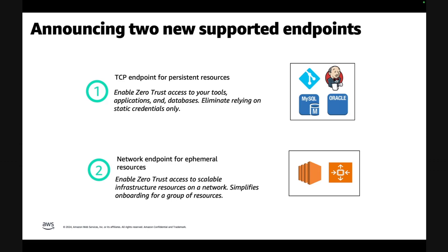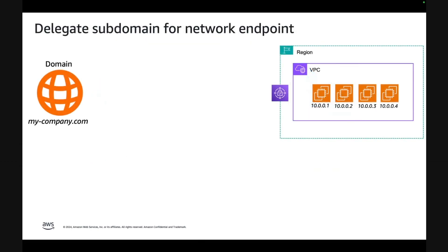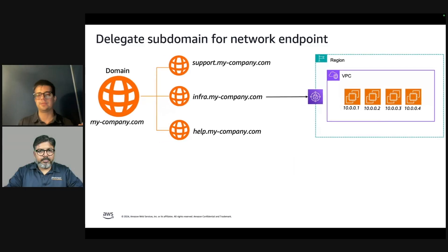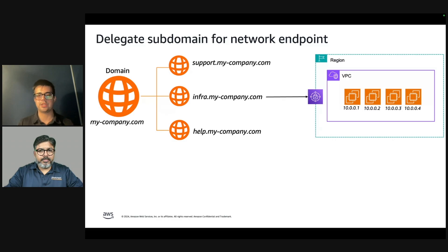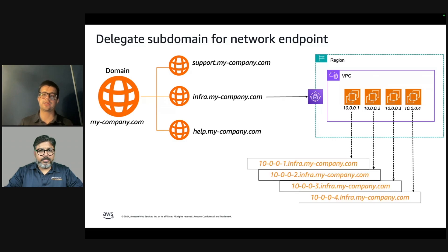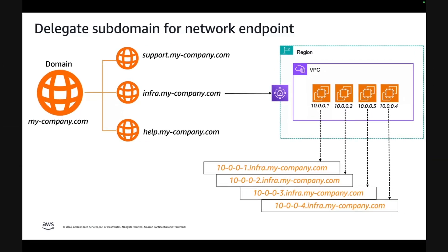We've built the network endpoint keeping in mind that every time any new resources spin up or down, admins don't have to take any kind of actions from their side, while at the same time, the user experience to access these resources remains easy and convenient for developers. For the network endpoint, you can delegate a subdomain from your organization. Once you do so, Verified Access generates a public DNS record for each active resource in the specified network. These DNS records are generated in the delegated subdomain, ensuring your users get to use user-friendly DNS records aligned with your organization.